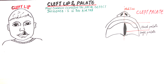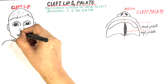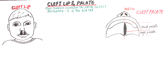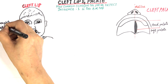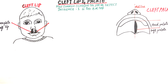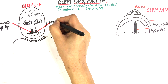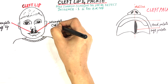Cleft lip and palate can either be complete or incomplete. A complete cleft lip involves the lip along with the nostril. An incomplete cleft lip spares the nostril and is limited to the lip only, mostly involving the upper lip.